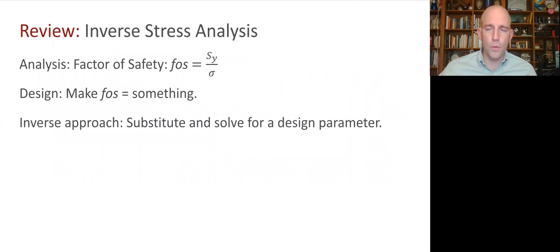All right. So that's how we apply the analysis. And then when we want to use this for design, we can invert the stress analysis with these steps. So when we're just analyzing the factor of safety, we say the factor of safety is the allowable stress, often something like the yield strength of the material divided by our estimate of the peak stress. Now in design, we want to make the factor of safety be something. And so the approach here is to substitute in for our estimate of the stress and then solve for geometric design parameters that we can choose or other parameters.